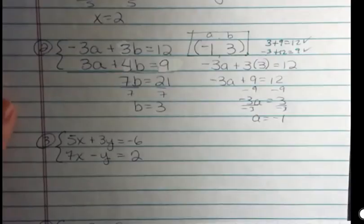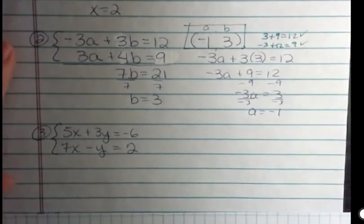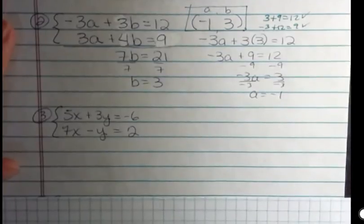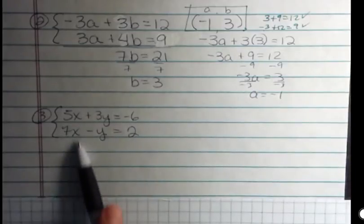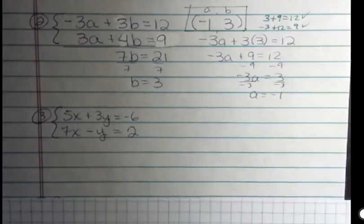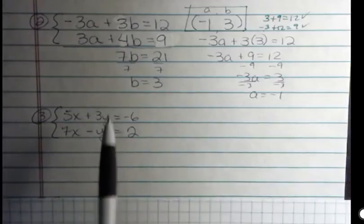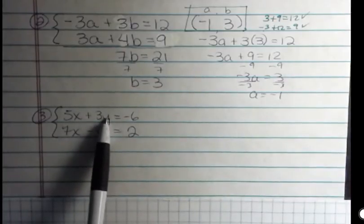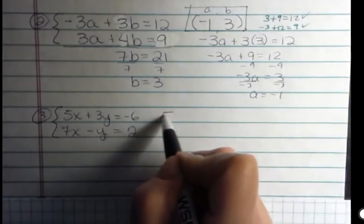I want to show you number 3 because number 3 is not ready to add together. The other 2 we could add together right away and something would drop out. But in this one, that's not true. If I were to add together, I'd get 12x and 2y and negative 4. That doesn't help me. So what I'm going to do is multiply this bottom equation by 3. And if I do that, then I'm going to have positive 3y and negative 3y.